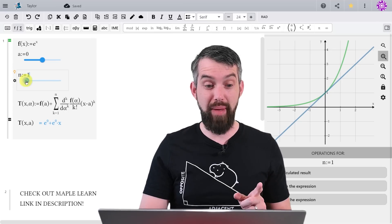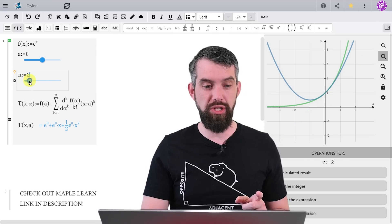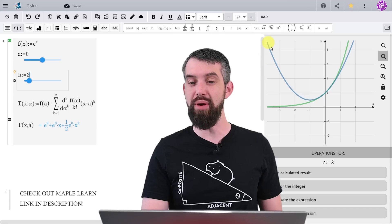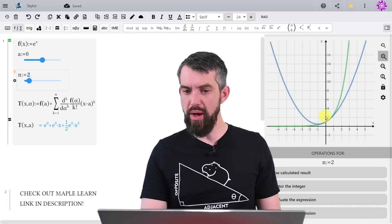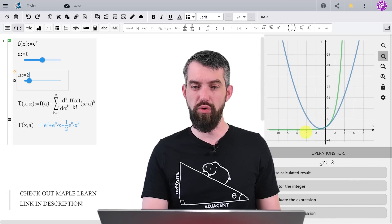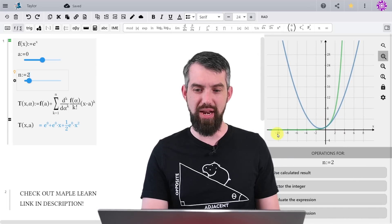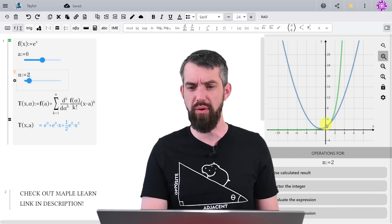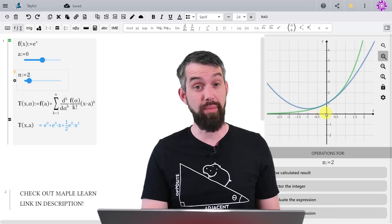For example, if I drag my slider from n equal to 1 to n equal to 2, what is computed out is this polynomial. It is now a quadratic. If I really zoom out here, you can start to see that the quadratic and the exponential really are very different far away from the point x equal to 0. But close to x equal to 0, it's a good approximation.